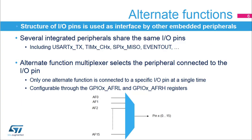Several integrated peripherals, such as the USART, timers, SPI, and others, share the same I/O pins in order to interface with the external environment. Peripherals are configured through an alternate function multiplexer, which ensures that only one peripheral is connected to the I/O pin at a single time. This selection can be changed during runtime of the application through the GPIOX AFRL and AFRH registers.